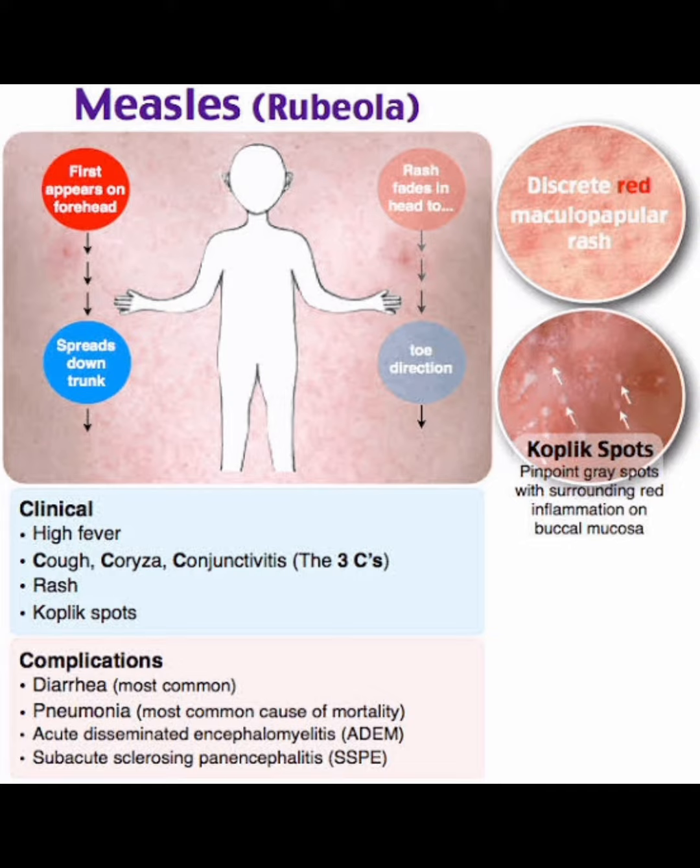The rash fades in a head-to-toe direction — head-to-toe direction is the characteristic presentation of measles. There is a discrete red maculopapular rash. Another important feature is the Koplik spot.